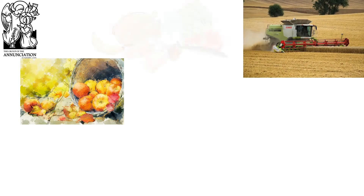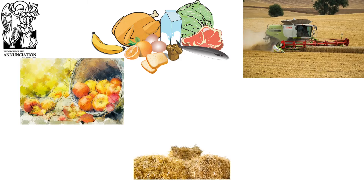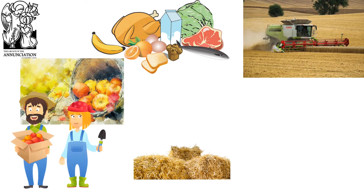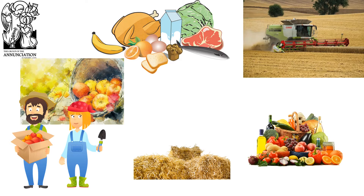Oh, apples! What could the topic be? Oh there's a machine — I wonder what that does. Okay, some food, some straw. Oh, two people — I wonder what job they do, and some food. So here are all our clues. We've got pictures of food at the top and down at the bottom there's some straw. There's two people that seem to have a certain job, and right in the top corner is a combine harvester. That's a big clue. Has everyone worked out what our topic is today?